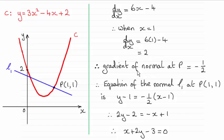We're after the gradient of the normal which is perpendicular to the gradient of the tangent, so we just use the perpendicular gradient rule to get that gradient of the normal. In other words, turn the fraction 2 over 1 upside down and negate it.